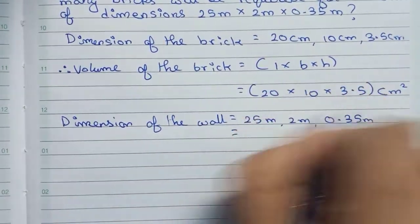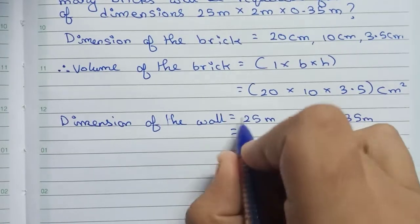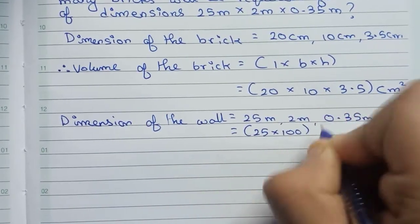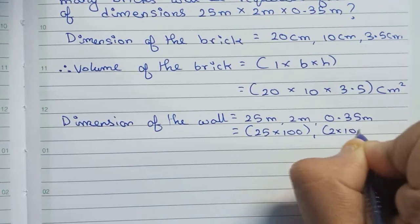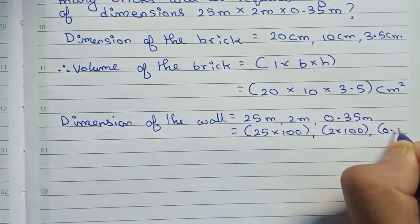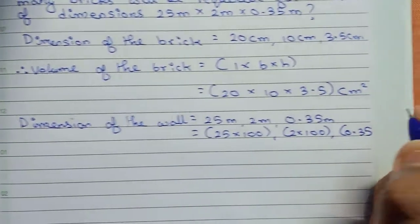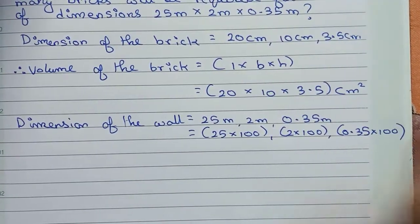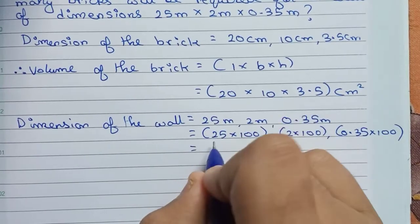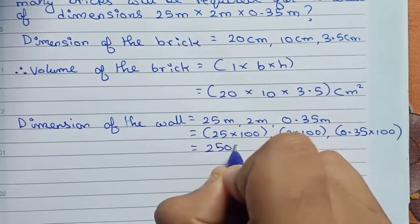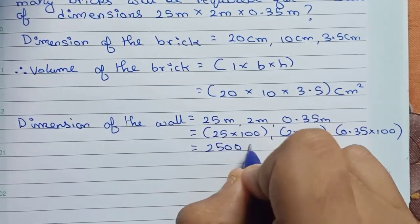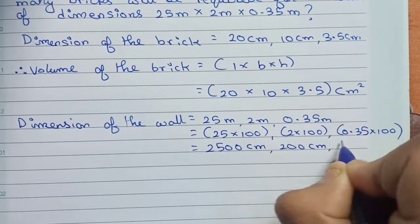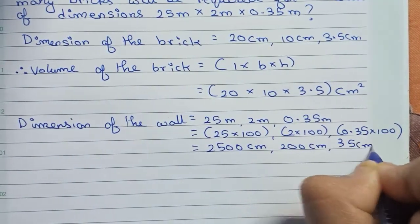To convert into centimeters, you have to multiply by 100. So 25 × 100, 2 × 100, 0.35 × 100, which equals 2500 cm, 200 cm, 35 cm. Therefore, this is the dimension of the wall.